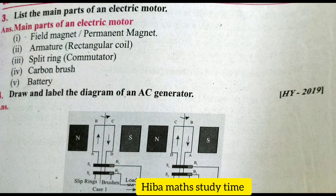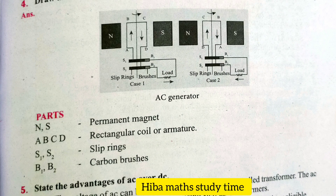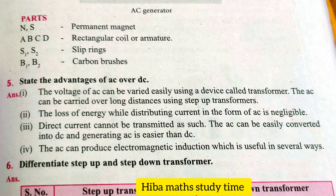Draw and label the diagram of an AC generator. The labeled parts are: N, S — permanent magnets; A, B, C, D — rectangular coil; R — armature; S1, S2 — slip rings; B1, B2 — carbon brushes.